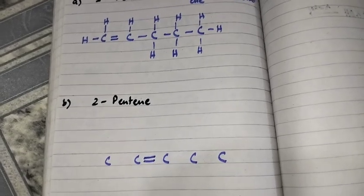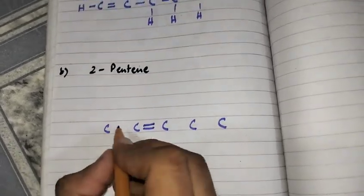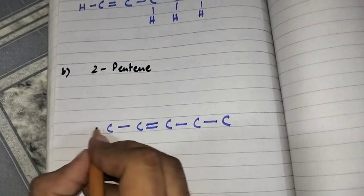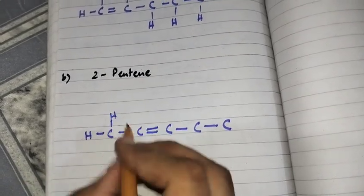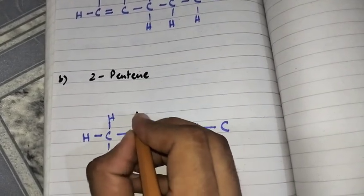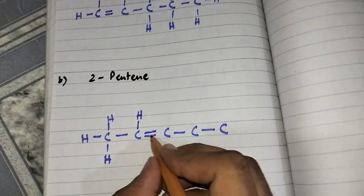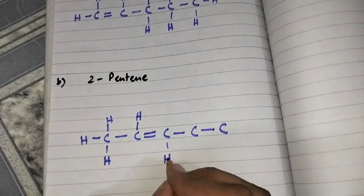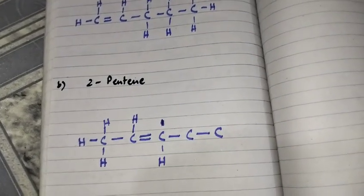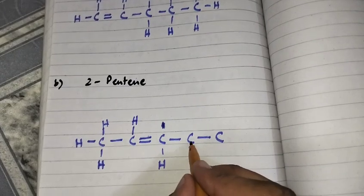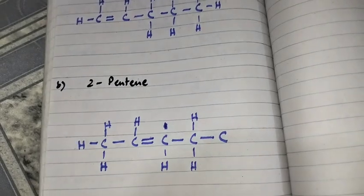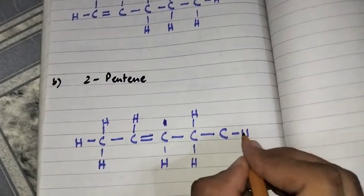Now we have to complete the valencies. The remaining carbon-to-carbon bonds are single bonds. The first carbon has only one bond, so three hydrogen atoms will be attached. The second carbon has three bonds, so one hydrogen atom completes it. The third carbon also has three bonds, so one hydrogen atom is added.